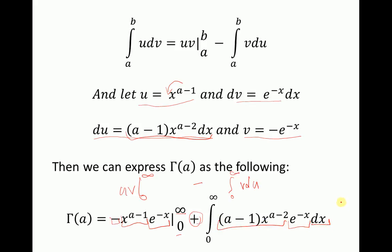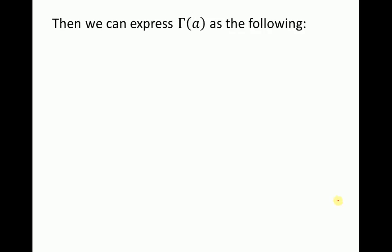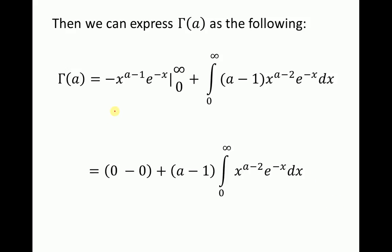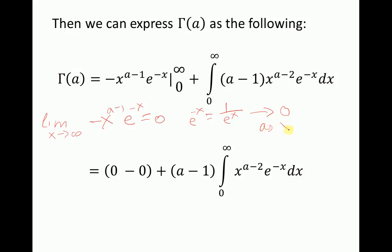Now we have to see if we can simplify this expression. The term negative x to the power of alpha minus 1 times e to the power of minus x: the limit of that as x goes to infinity equals 0, because e to the power of minus x equals 1 over e to the power of x, which goes to 0. And if x equals 0, we have minus 0 to some power times 1, so that is also 0. Therefore the boundary term gives us 0 minus 0, and we are left with the remaining integral.